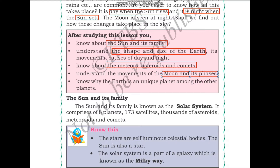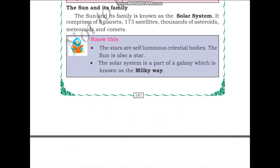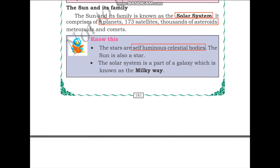Let us start by learning about the Sun and its family. The Sun and its family is known as the solar system. It comprises of eight planets, 173 satellites, thousands of asteroids, meteoroids, and comets. Satellites are bodies that revolve around the planets. The Earth has one natural satellite, which is the moon. Together, the other planets of the solar system have 173 satellites. Stars are self-luminous celestial bodies, and the Sun is also a star.